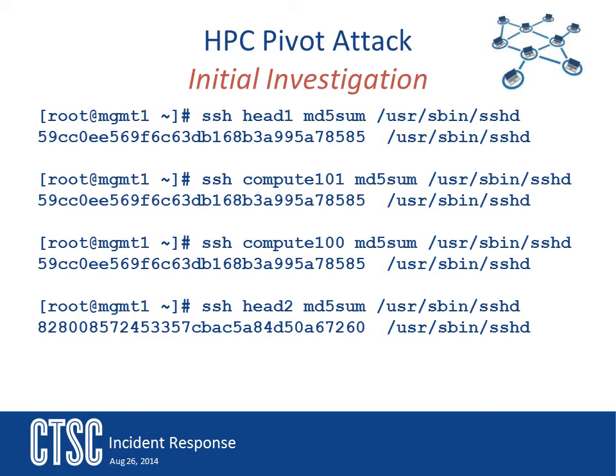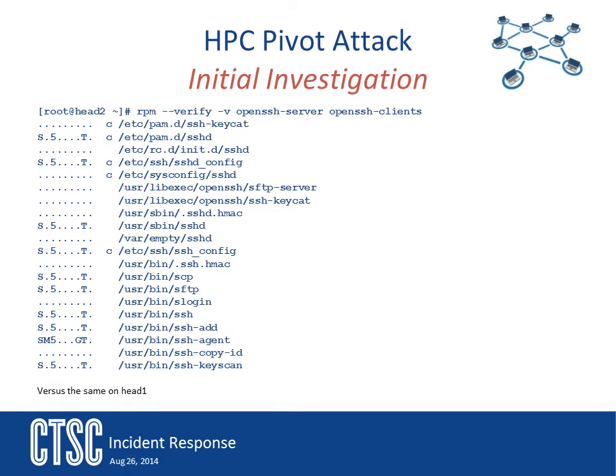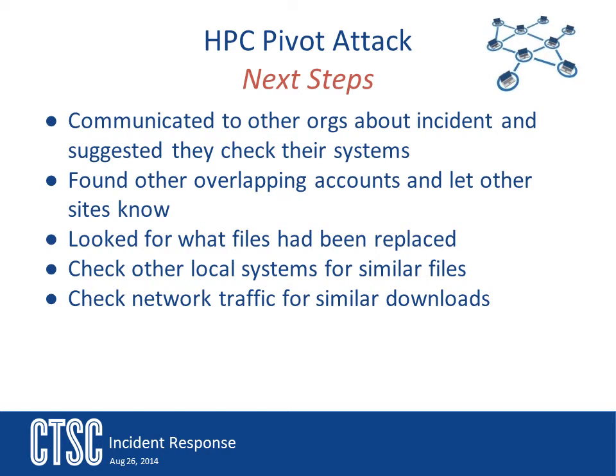Next, the response team had the admins use RPM to verify things on the system. RPM provides a verify function that looks at your packages, does a verification on them, stores all of this information in a small database, and compares it to the existing files on the system. This showed what was seen on the second head node compared to the good head node — SSHD was replaced, along with SCP, SFTP, and several other files. This helped the team identify other files that had been replaced. While it was obvious that SSHD had been replaced, had this step not been taken, a number of these files might have been missed. This is a good method for quickly identifying what files have been replaced on a compromised system.